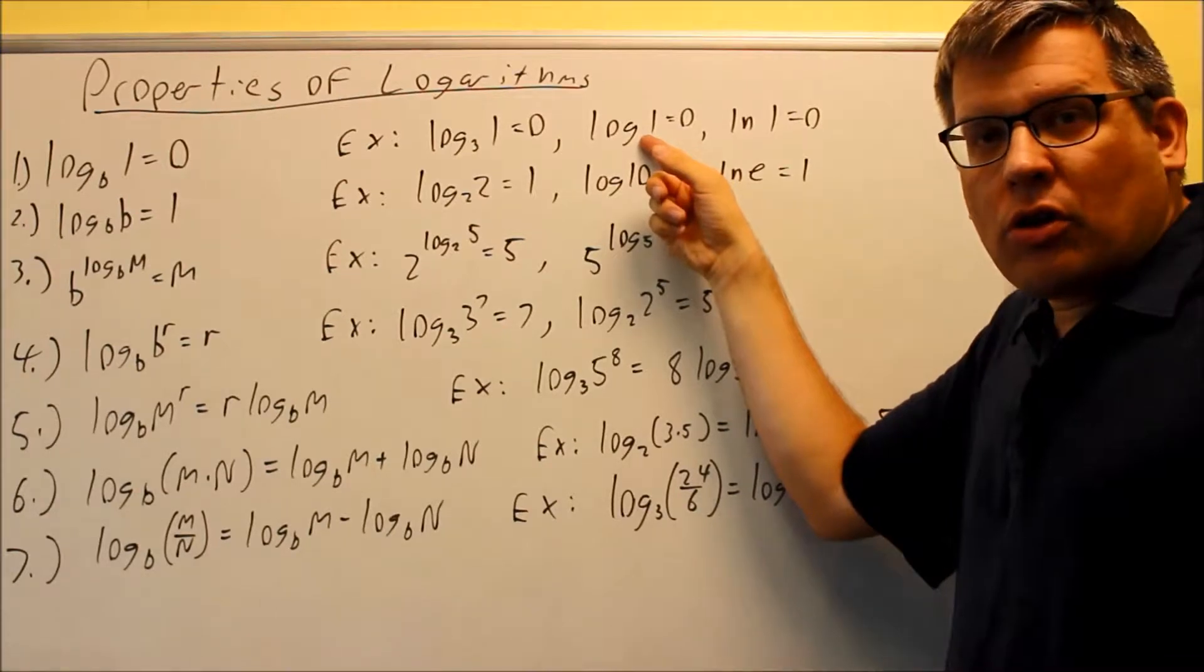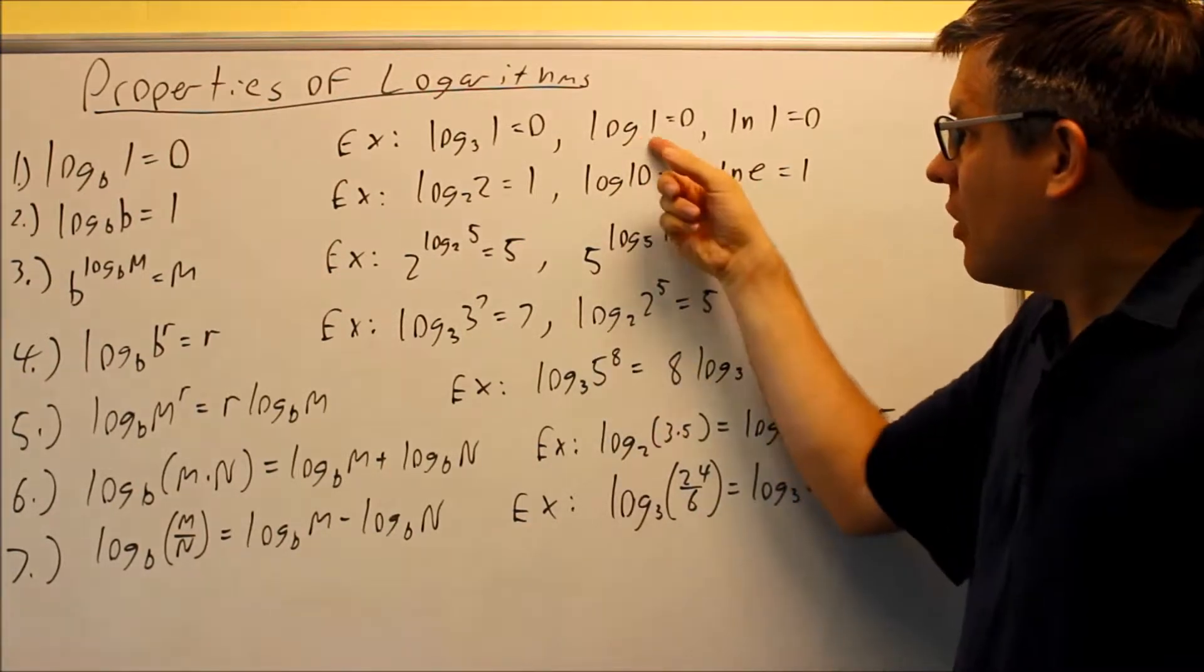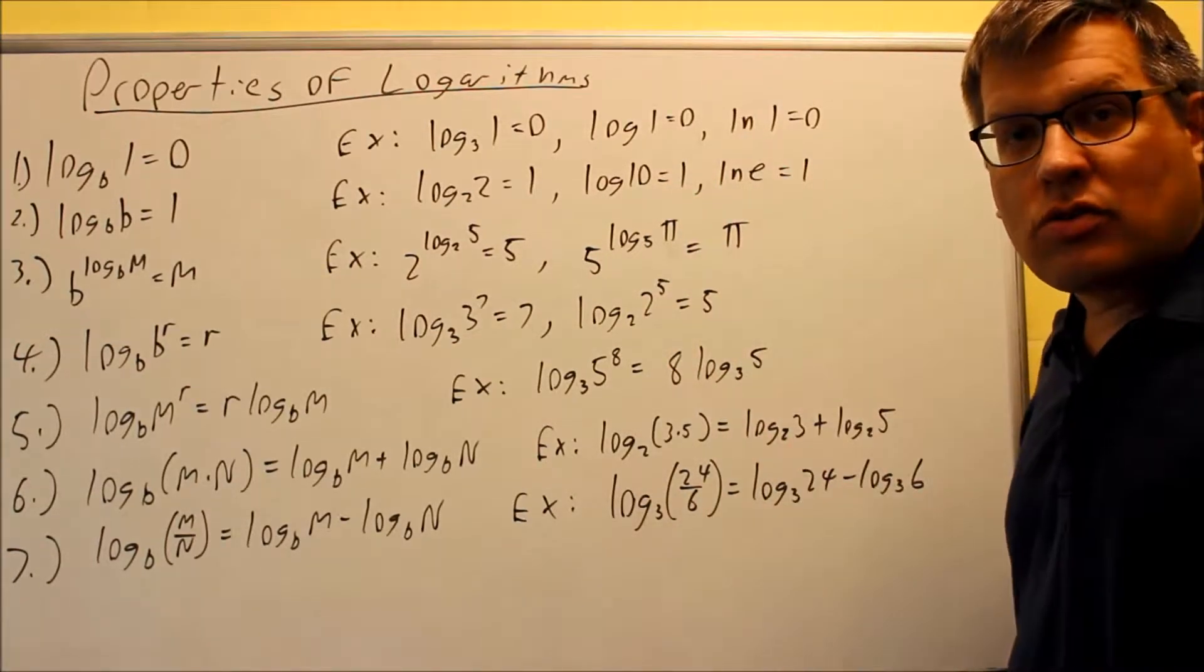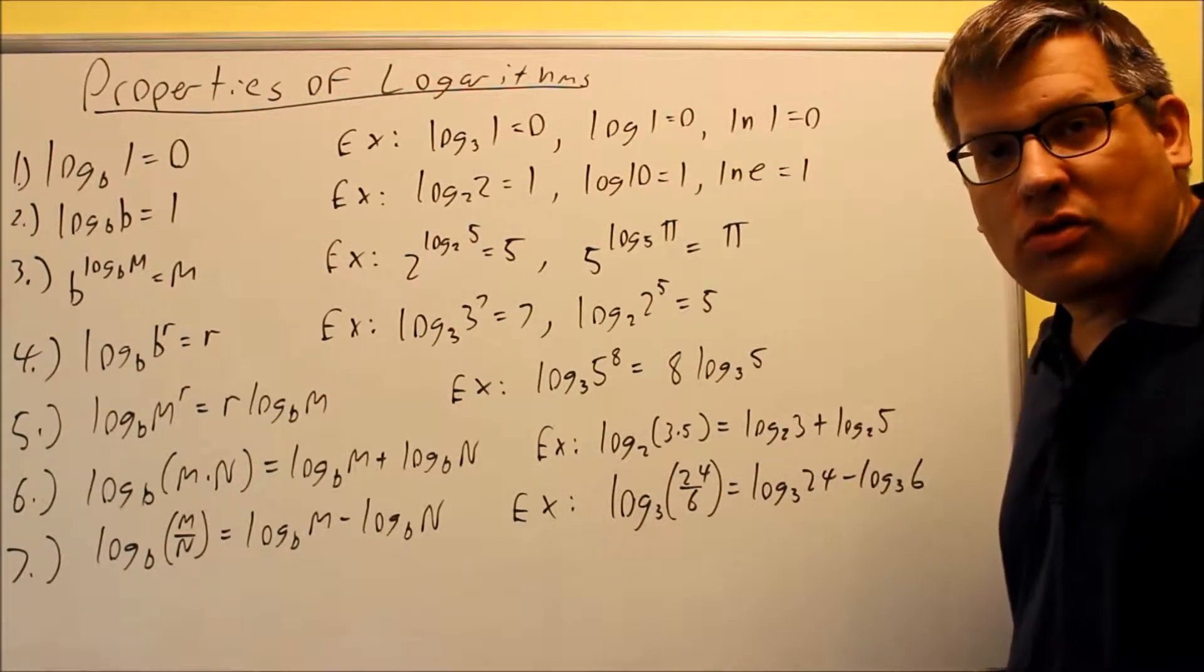A log with no number underneath, that's log base 10, equals 0. Log of 1 is 0. And then we have ln of 1. ln is log base e, which also equals 0.